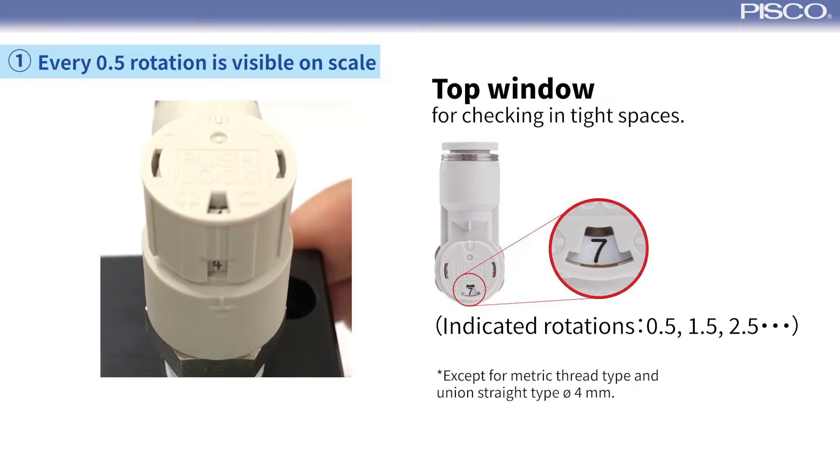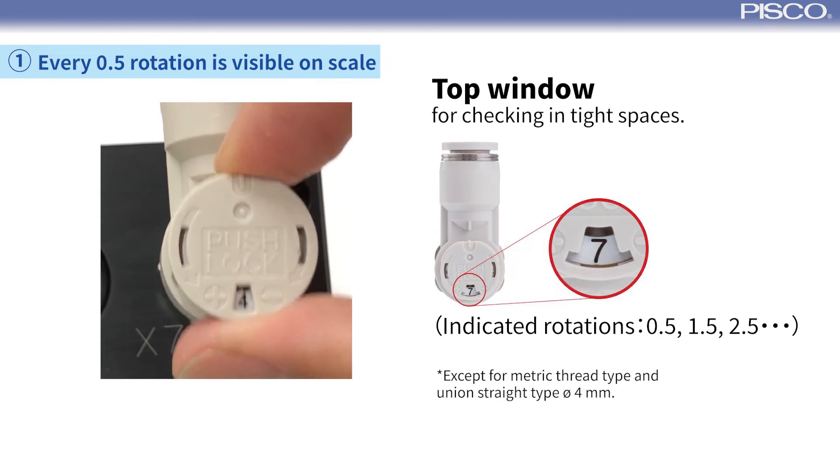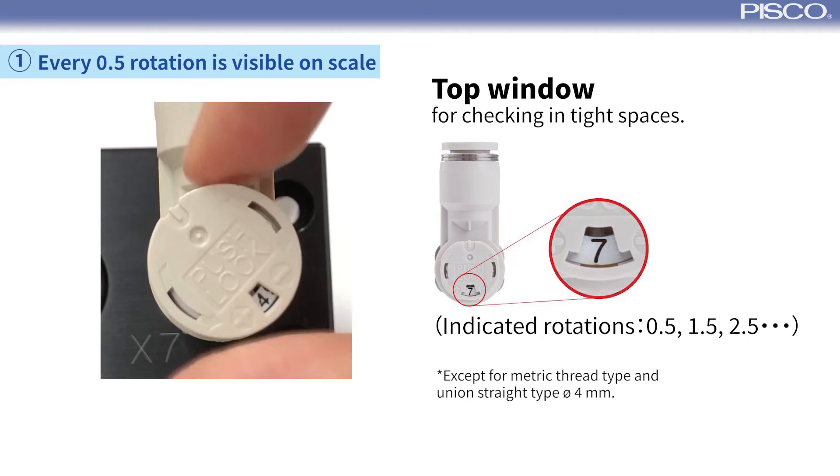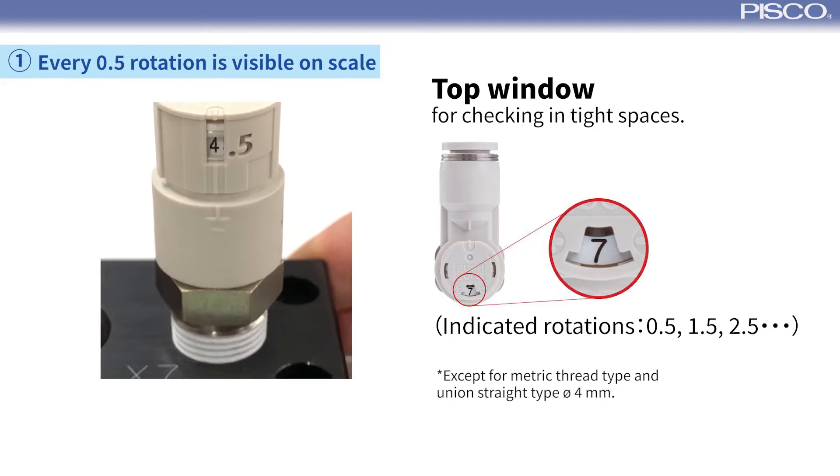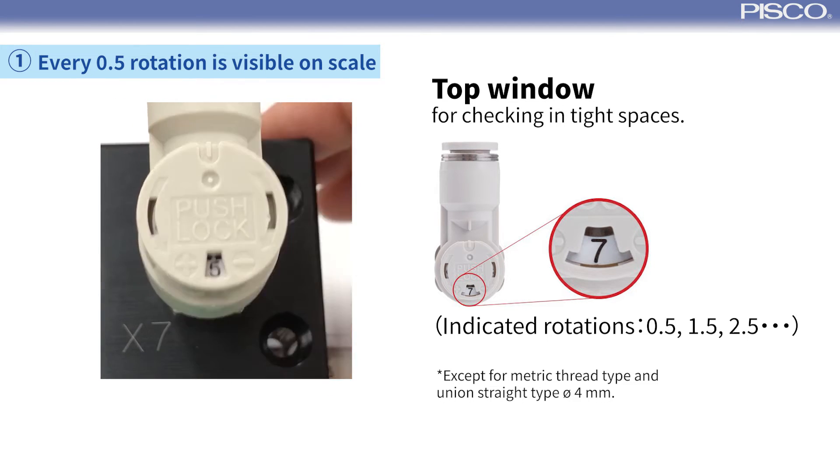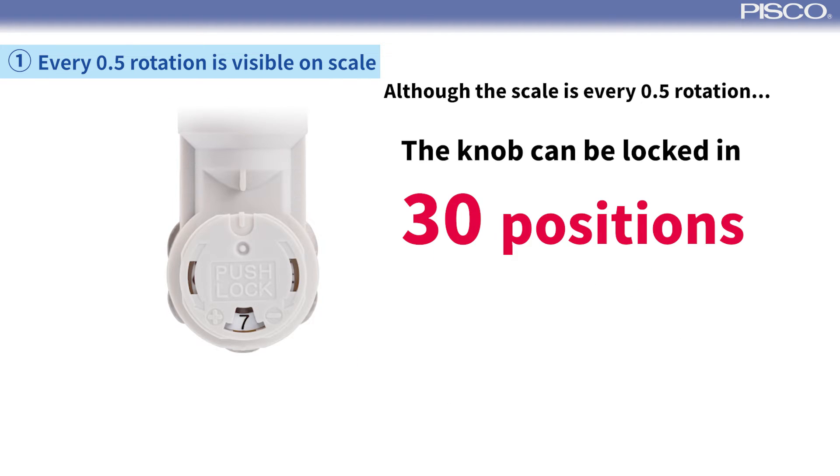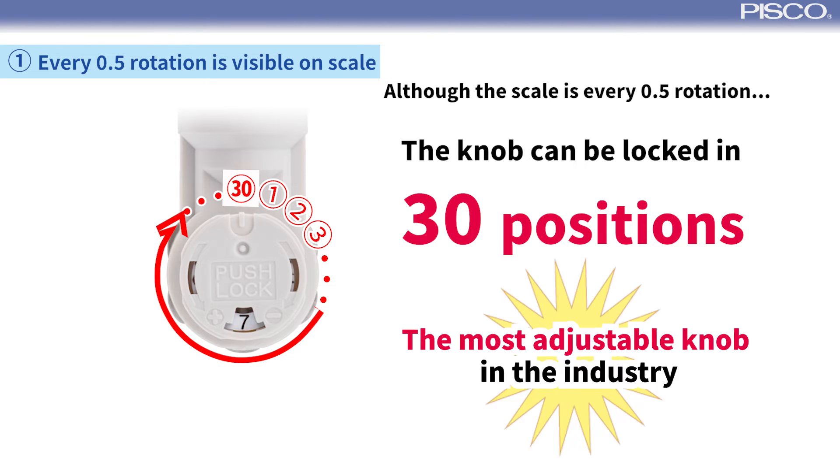There's also the window at the top of the knob, so you can check the number of rotations even in tight spaces where you can't see it from the side. Although the scale is every 0.5 rotations, it can be locked in 30 positions. It has the most adjustable locking positions in the industry.